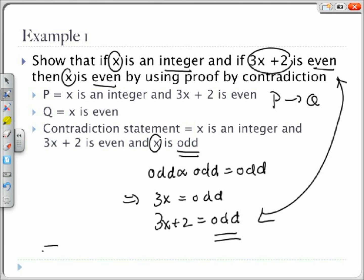With the contradiction, we can conclude that if x is an integer and 3x plus 2 is even, then x is even.